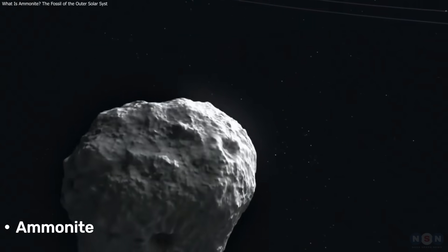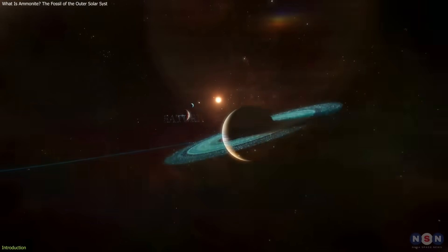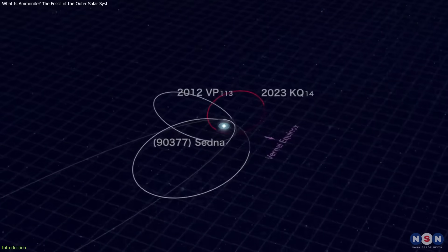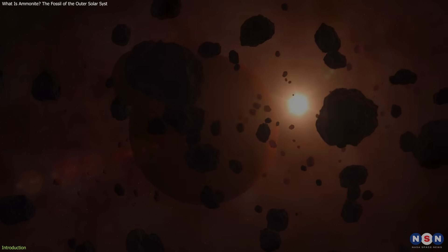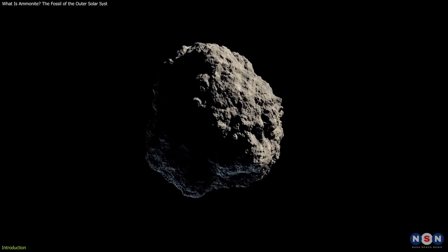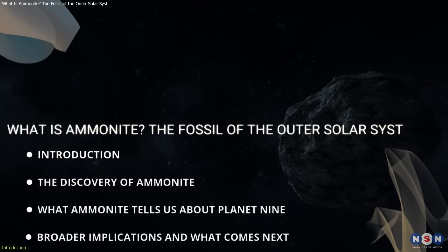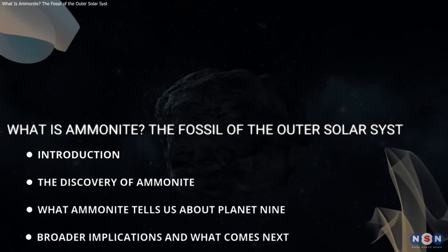A mysterious object nicknamed Ammonite has been discovered at the edge of our solar system and it's defying expectations. Its unusual orbit raises critical questions about the hidden ninth planet theory. This isn't about spectacle, it's about precision and data. Watch this video to learn more about Ammonite's surprising path and what it could mean for our understanding of the solar system.